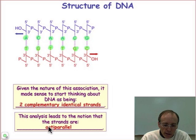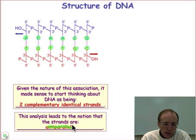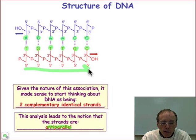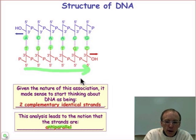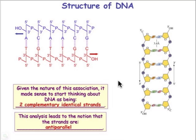Now it turns out — this is a small detail that isn't so obvious — that these two strands in the DNA double helix run in opposite directions to one another. The bottom strand's 5' to 3' direction is from left to right. In the top strand, the 5' to 3' direction is from right to left. If we take this stick figure and put some real bonds and atoms associated with it, what we have is a structure that looks like this.